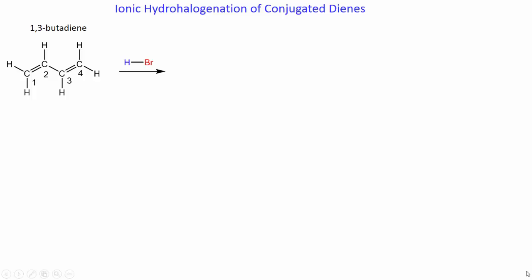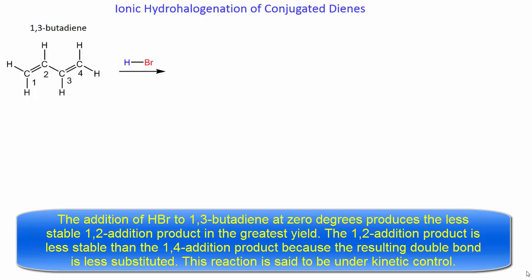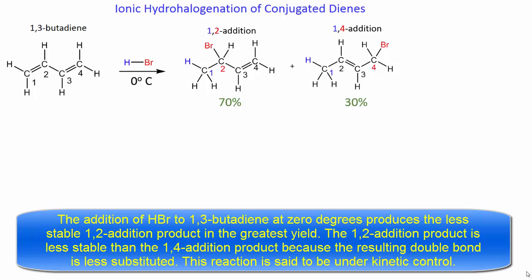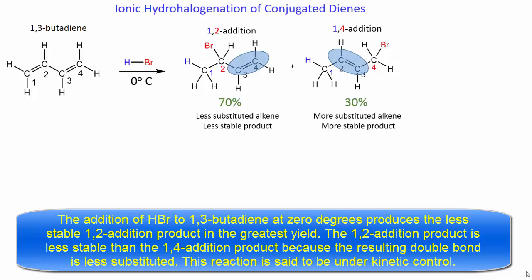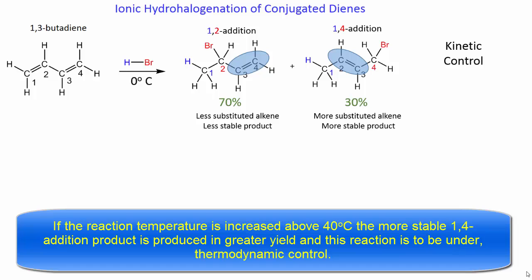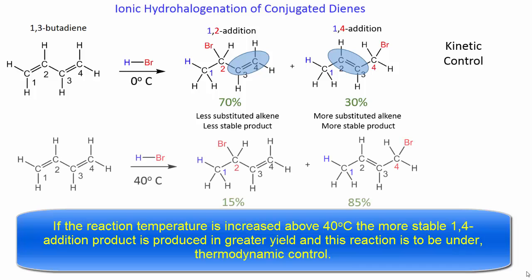Ionic hydrohalogenation of conjugated dienes: the addition of HBr to 1,3-butadiene at 0 degrees produces the less stable 1,2-addition product in the greatest yield. The 1,2-addition product is less stable than the 1,4-addition product because the resulting double bond is less substituted. This reaction is said to be under kinetic control. If the reaction temperature is increased above 40 degrees Celsius, the more stable 1,4-addition product is produced in greater yield, and this reaction is said to be under thermodynamic control.